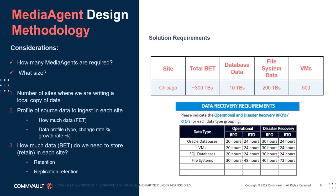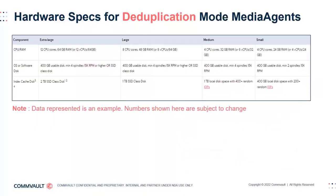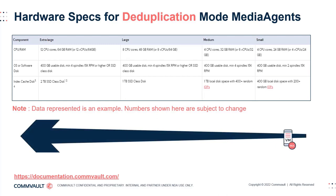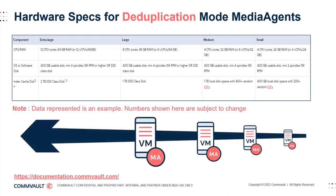Conversely, oversizing a solution at this stage could exclude you from a deal entirely. Your end goal is to balance your design with correctly-sized media agents and storage to satisfy all solution requirements while providing room for scalable growth. Remember that design architectures evolve over time, and you will likely have to factor in customer demands such as future growth, budget constraints, or allegiance to a particular hardware vendor. Commvault provides a detailed specification guide for media agents using deduplication mode, found on the Commvault documentation website, with specifications categorized into various sizes for easy selection.